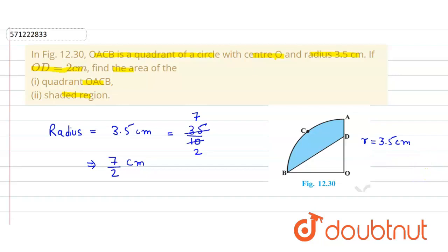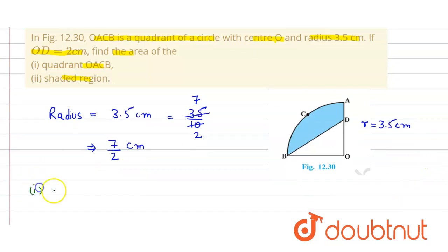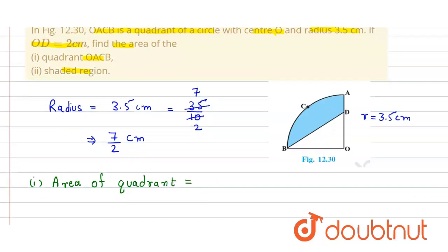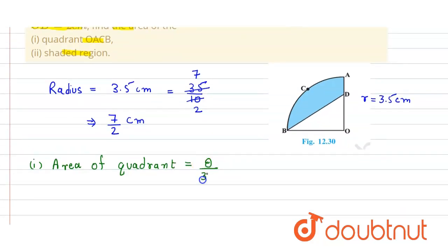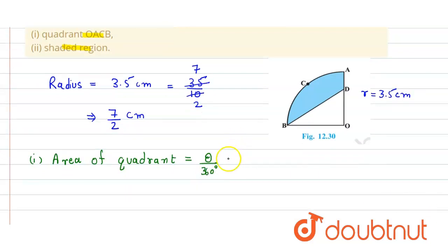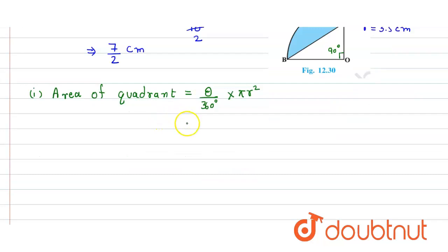Now we find the area of quadrant OACB. The area of a quadrant equals theta divided by 360 degrees, multiplied by pi r squared. Since this is a quadrant, angle AOC equals 90 degrees. So we substitute: 90 divided by 360, into 22 divided by 7, into r which is 7 divided by 2, times 7 divided by 2.